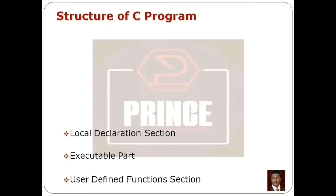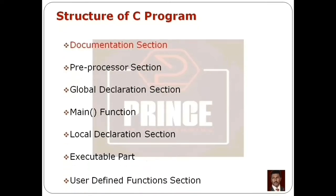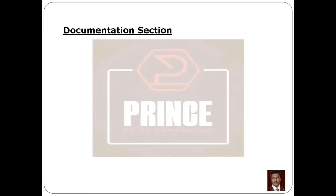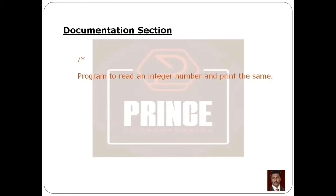First, we will talk about the Documentation Section. We will describe the program using comment lines — specifically multiline comments. The multiline comment starts with a forward slash and an asterisk symbol. We will start this section: the program is to read an integer number and print the same.